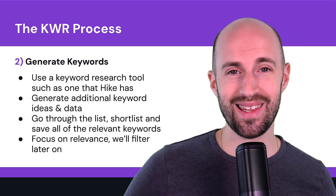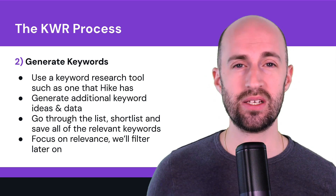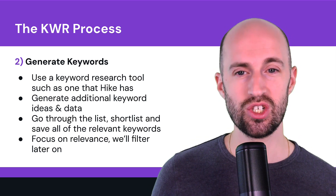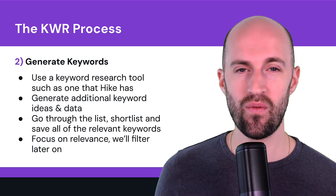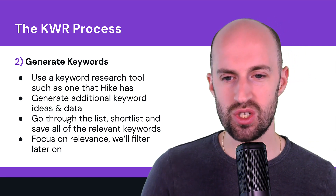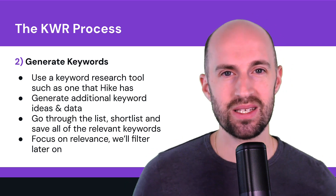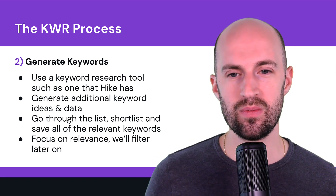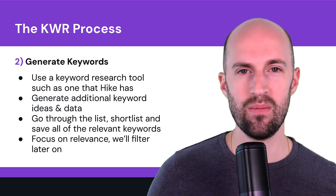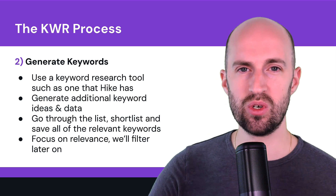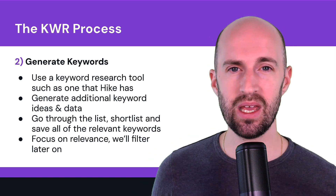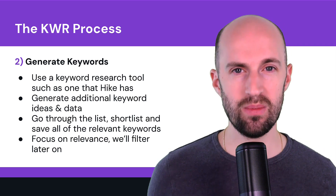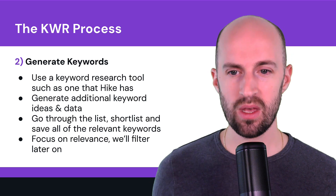Step two is to generate the keywords. Use a keyword research tool — such as the one in Hike — enter your seed keyword phrase, and generate additional keyword ideas and data including average monthly searches and competition score. Go through the generated list, then shortlist and save all relevant keywords for later. Focus on relevance for now, as you'll filter by search volume and difficulty score later — don't be too selective at this stage.